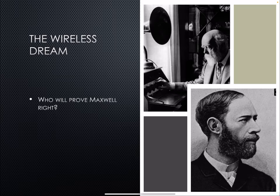Coming back to the 1800s, around the mid-1800s, around the 1860s, Maxwell wrote his proper theory of electromagnetism and predicted the existence of waves that would travel at the speed of light. If you can generate a time-varying electric field, with an appropriate arrangement it can generate a time-varying magnetic field, and that in turn can generate an electric field that travels in space at the speed of light.